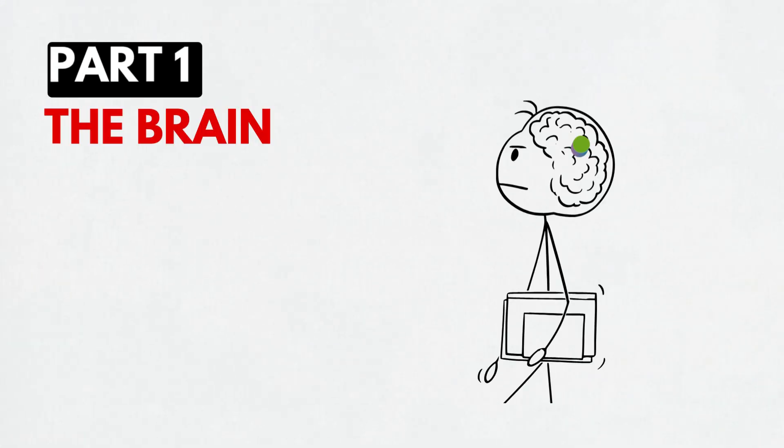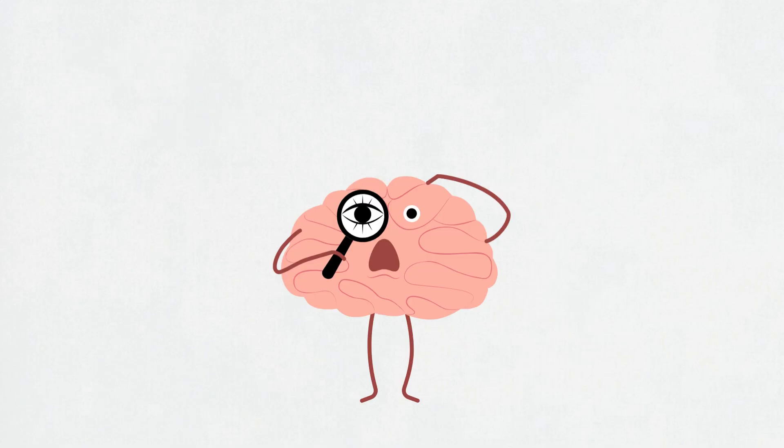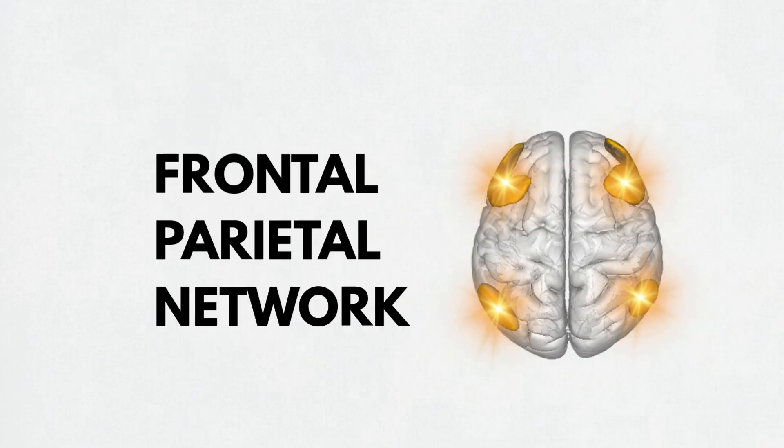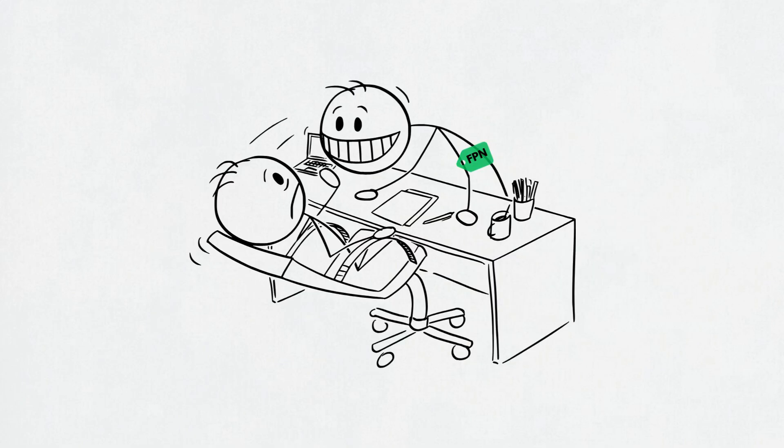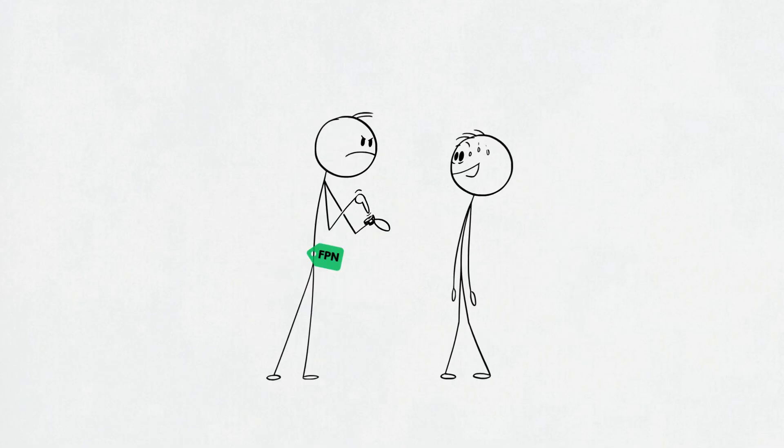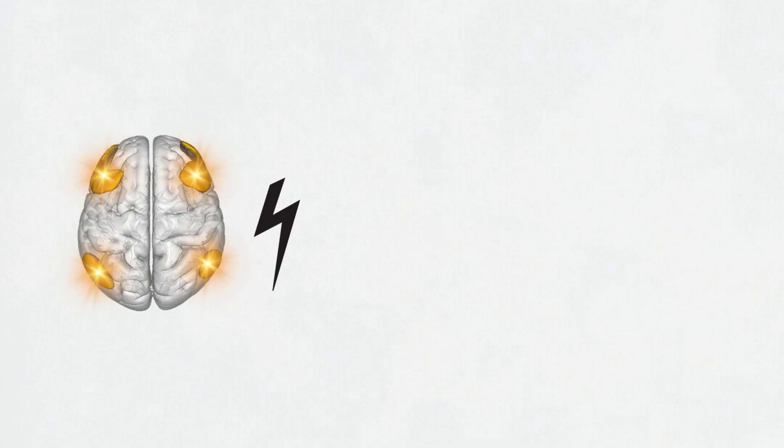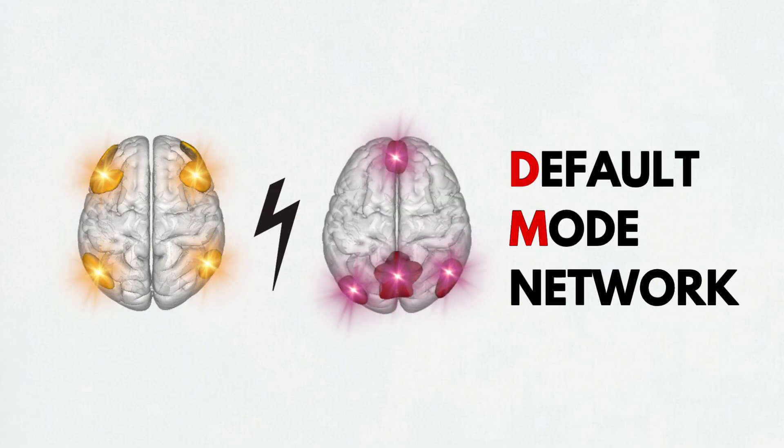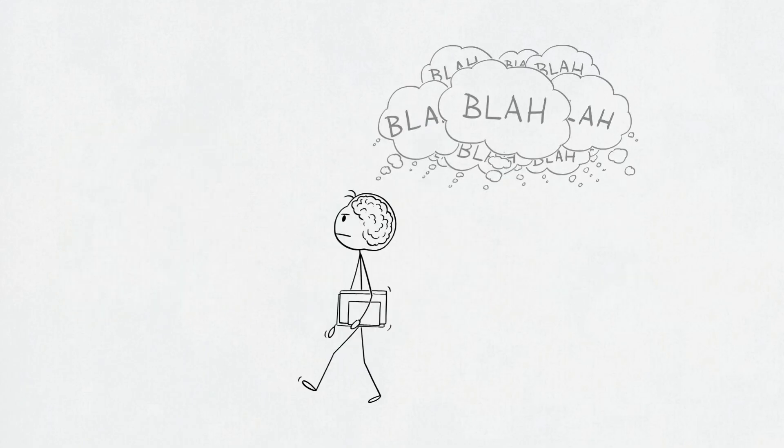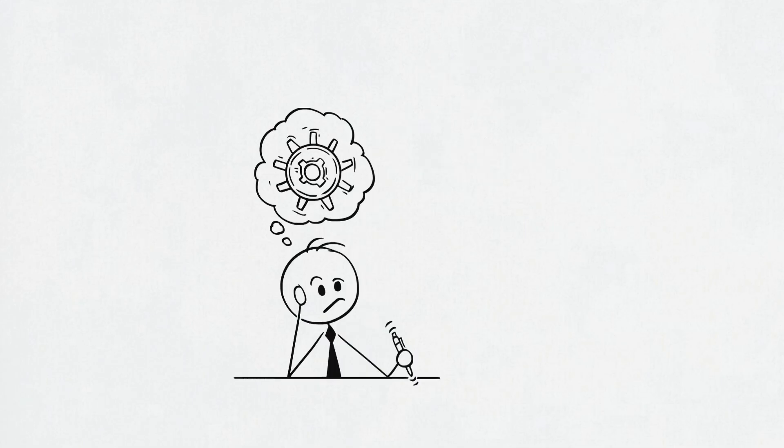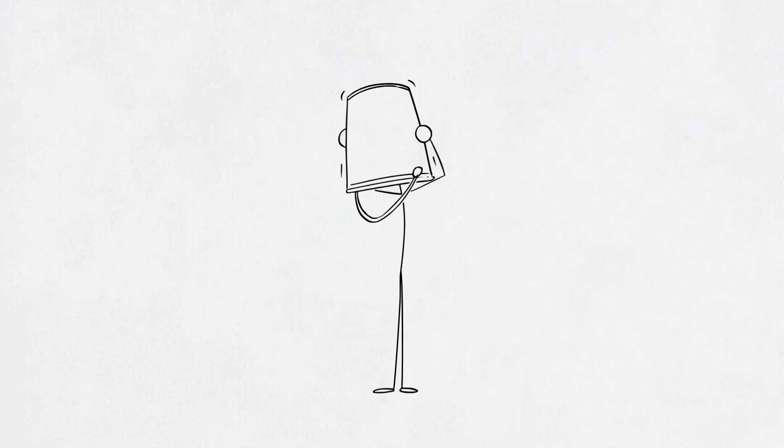Let's break it down. Part 1. The brain, aka your internal Wi-Fi router. Focus starts with your brain's attention network, especially a part called the frontoparietal network, FPN for short. Think of this as your brain's project manager. It helps you plan, stay on track, and block out distractions. But the FPN has a rival, the default mode network, or DMN. That's your brain's background chatter station. It kicks in when you zone out, start daydreaming, or suddenly remember that embarrassing thing you said in 2017.